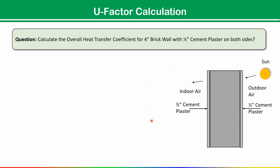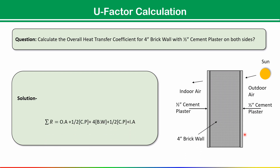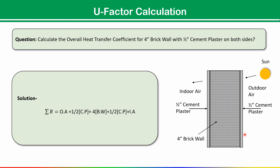To find the U-value, we first need to find the summation of R — the total resistance. The summation of R equals: outside air resistance (OA), plus half-inch cement plaster (CP), plus 4-inch brick wall, plus half-inch inside cement plaster, plus indoor air resistance. Once we get the total summation of R, we can easily get the U-value since U is inversely proportional to summation of R.